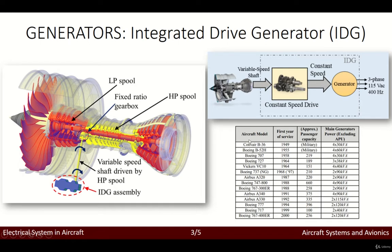There are several models of aircraft with different types of IDGs. The generators might produce, for instance, two times 90 kilovolt-amperes because we have two engines — that is the power. In the case of a 747, which has four engines, you can see that it provides four times 90 kilovolt-amperes. So the idea is that by using the engine we get rotation, this rotation is transformed to a constant speed, and this constant speed allows us to generate the same values all the time.